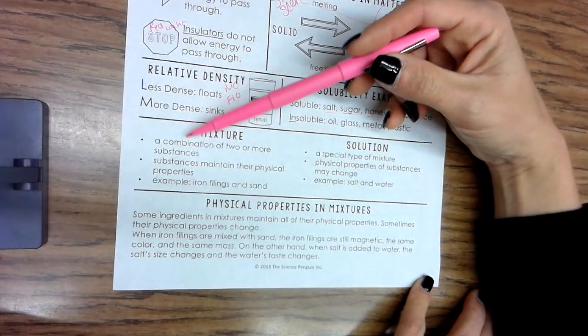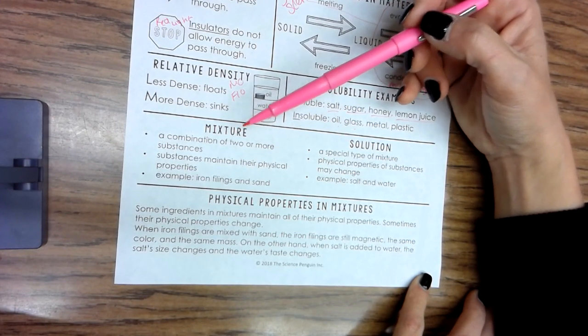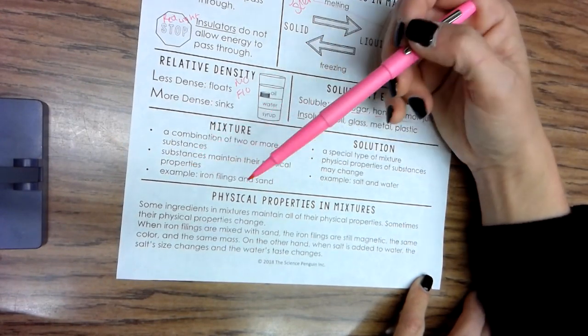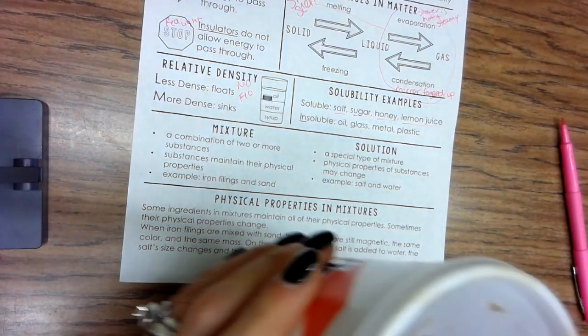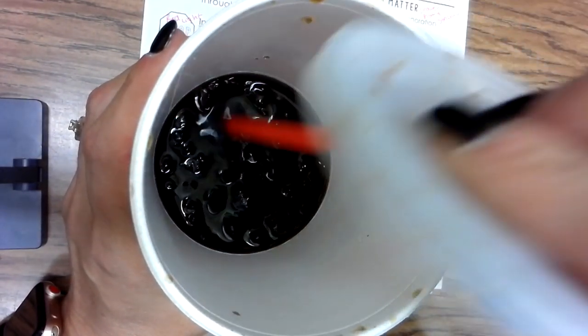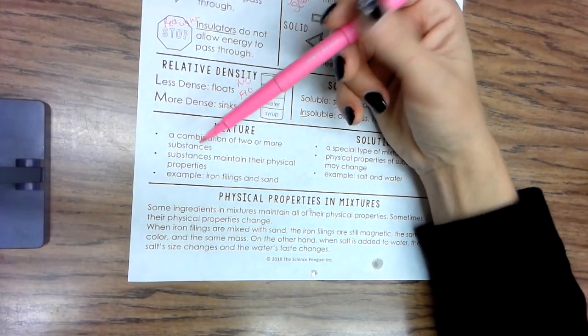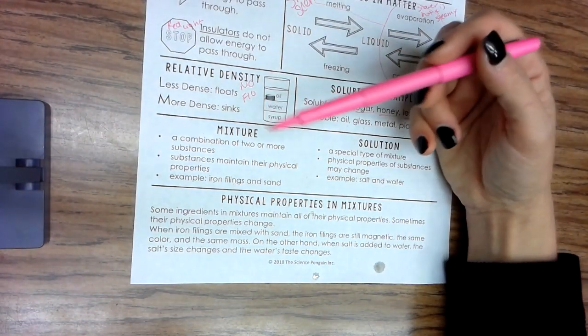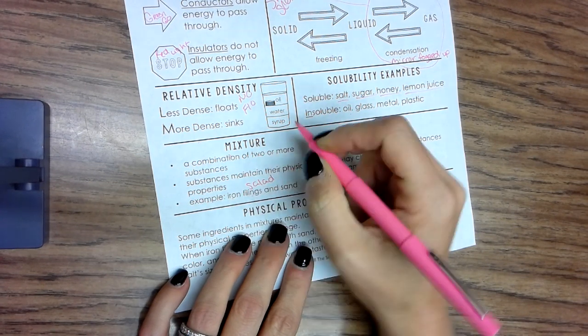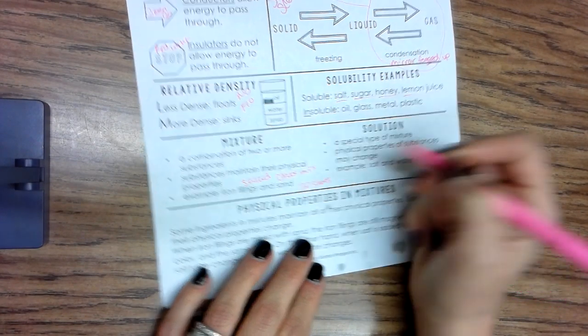A mixture is a combination of two or more substances. Rachel Blackman, are you listening? Because this got you yesterday. Mixture: a combination of two or more substances. The substances maintain their physical properties. Example: iron filings and sand. Look here, I have a mixture of soda and ice. When you combined soda and ice, did they maintain their physical properties? Yes. We'll also say salad, Chex Mix, my 120 pairs of shoes.